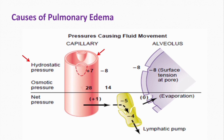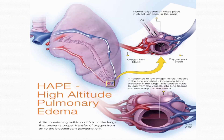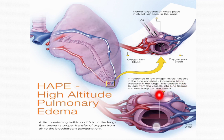Third, decreased plasma colloid osmotic pressure, seen in severe hypoproteinemia. Fourth, high altitude pulmonary edema: at high altitudes, hypoxia causes vasoconstriction in pulmonary vessels — unlike systemic vessels where hypoxia causes vasodilation. This hypoxia-induced vasoconstriction increases pressure in pulmonary capillaries, which can lead to lethal edema.